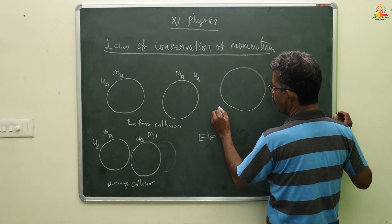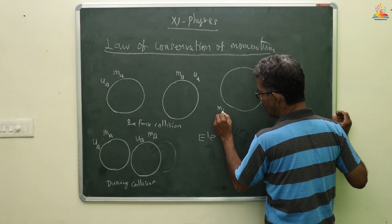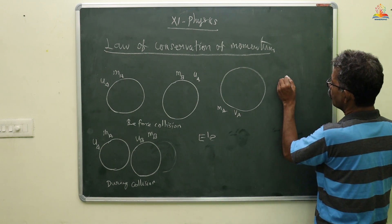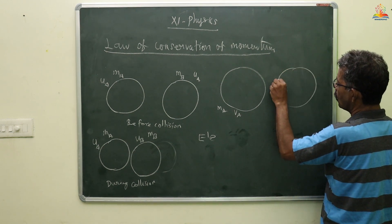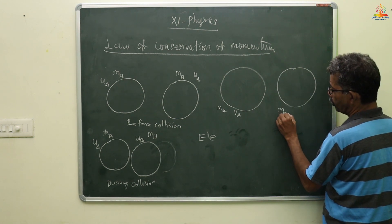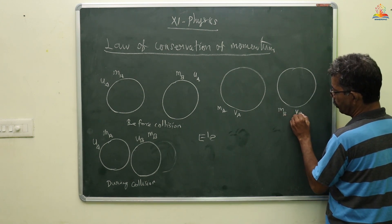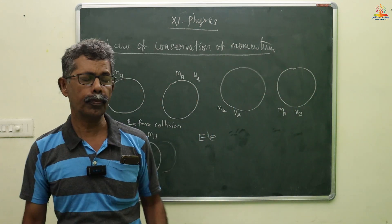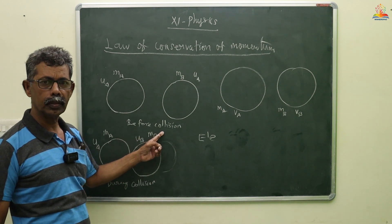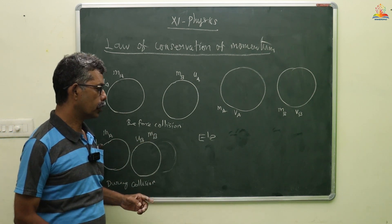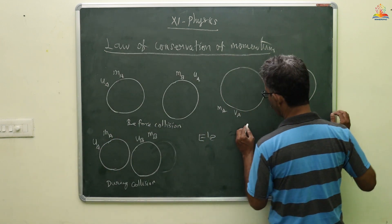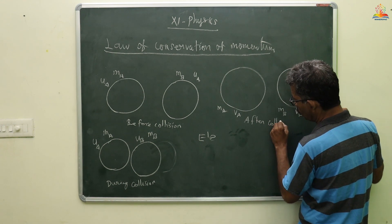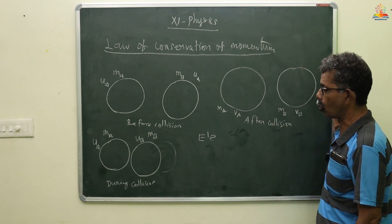After collision: the mass of object A remains M_A with final velocity V_A, and the mass of object B remains M_B with final velocity V_B. So there are three stages: before collision, during collision, and after collision.